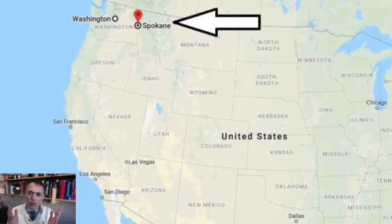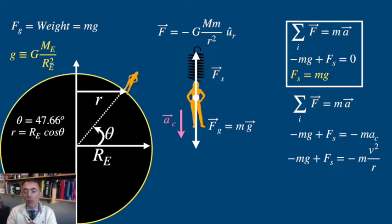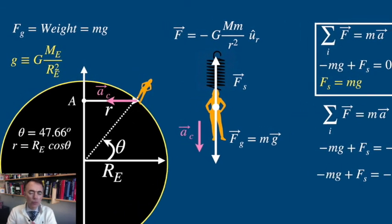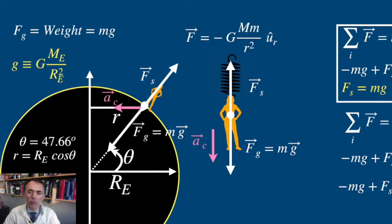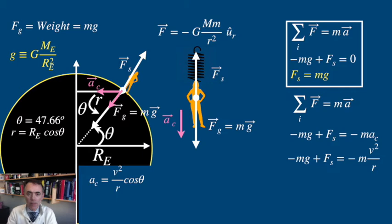Now, let's assume that we are in Spokane in the state of Washington. The city is at 47.66 degrees north. This means that the radius of curvature will be the radius of the Earth multiplied by the cosine of 47.66. But there is more: because you are moving on a circle on a plane perpendicular to the axis of rotation of the Earth, it happens that the centripetal acceleration is not pointing to the center of the Earth — it points to some point A on the axis of rotation. Because of this, the force of gravity mg is not in the same line as the force of the spring anymore, although this is a small effect. Here, the component of the centripetal acceleration in the direction of mg is ac times cosine of theta. This is v squared over r times cosine of theta, which can also be written in terms of omega as r omega squared times cosine of theta.